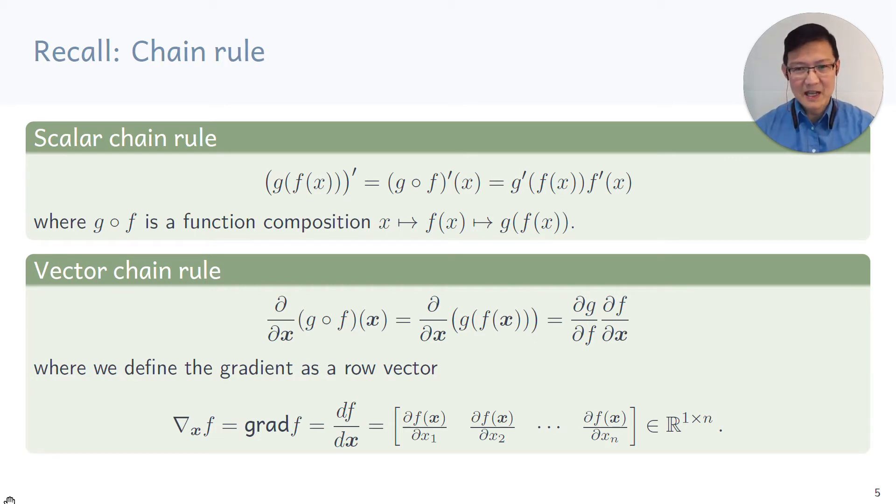Given two functions f and g, if we take the composition of them, f first and then g applied later, and we take the gradient of the composed functions g composed with f, then we first take the gradient of g while keeping f constant inside and then multiply that with the gradient of f.